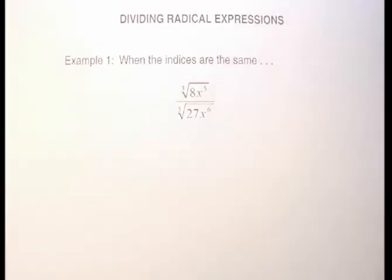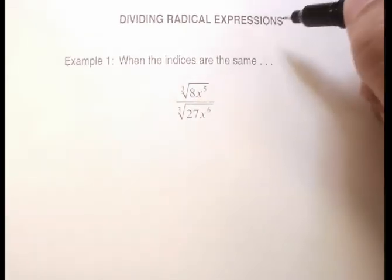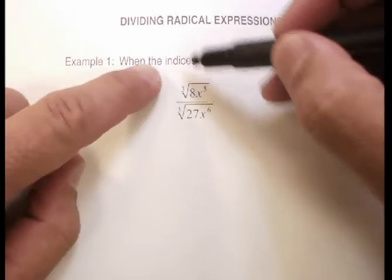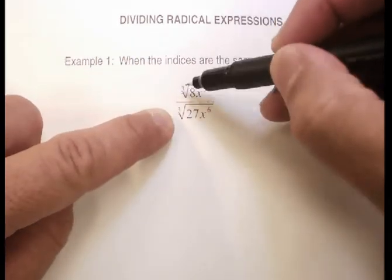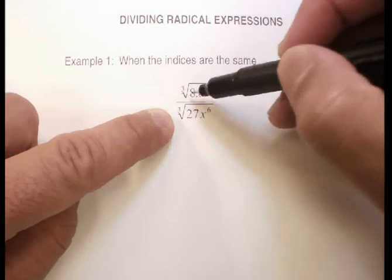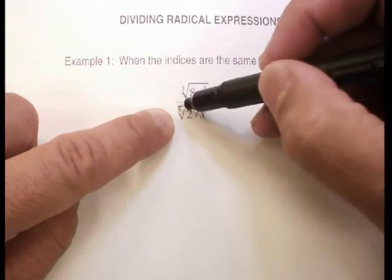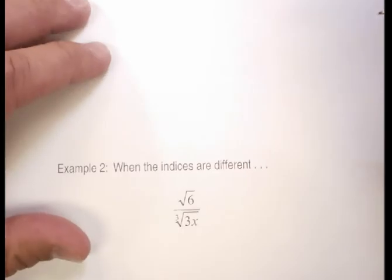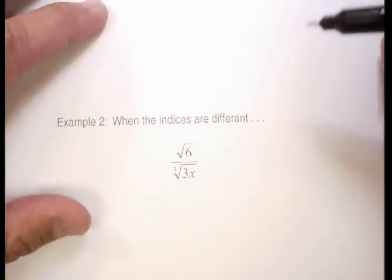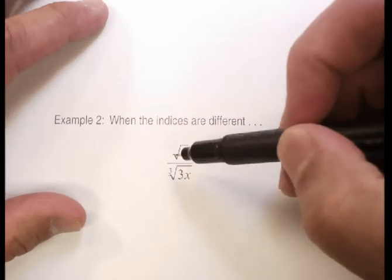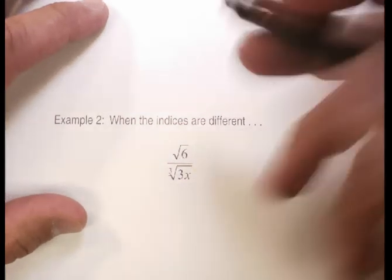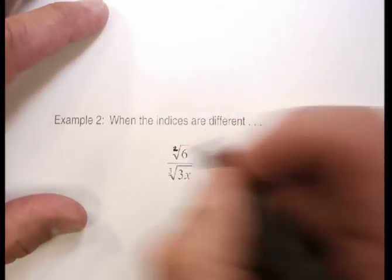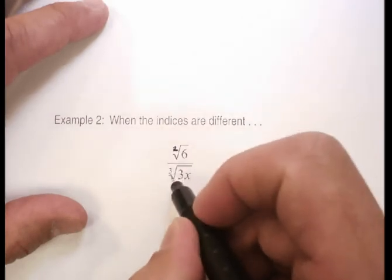In this video I'm going to show you how to divide radical expressions, and I'm going to do two types. The first is when the indices are the same — for example, the cube root of 8x to the fifth divided by the cube root of 27x to the sixth. The second is when the indices are different — the square root, which just means index 2, of 6 divided by the cube root of 3x.